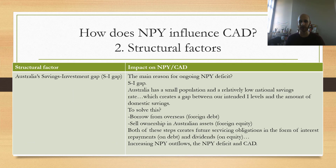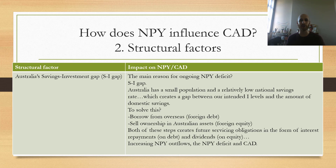Here's the one structural factor: Australia's savings-investment gap. Australia has a small population and a relatively low national savings rate, which creates a gap between how much we'd like to invest and how much we have in terms of domestic savings. To solve the SI gap, we borrow from overseas or we sell ownership in Australian assets. But both of these steps create future servicing obligations — money that has to flow out from NPY in terms of interest repayments or dividends — increasing NPY outflows, which will increase the NPY deficit and the current account deficit.